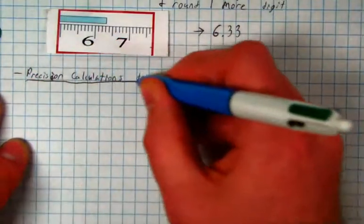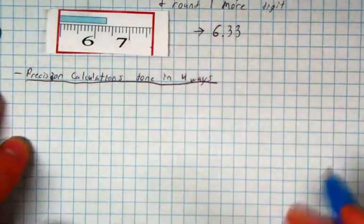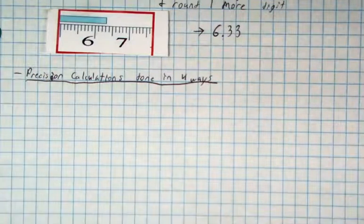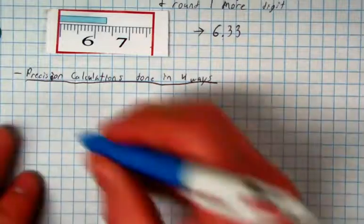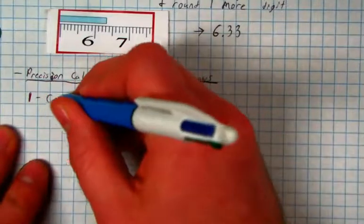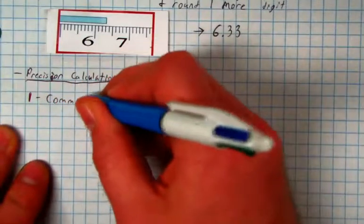Some of these will be measurements as well. These will sometimes apply to measurements. But how do we take those measurements? How do we round, essentially? How do we do our precision? Well, the first way is common sense. Sometimes it's just obvious.